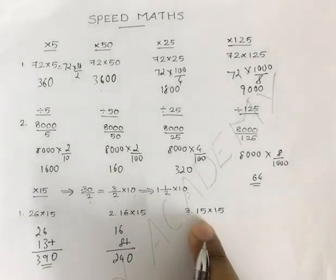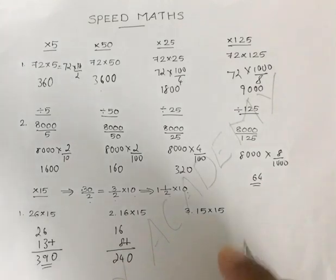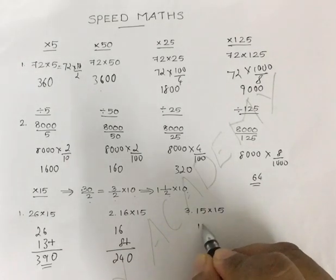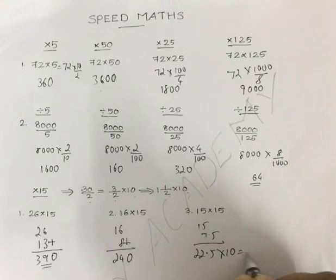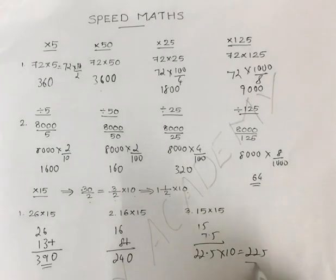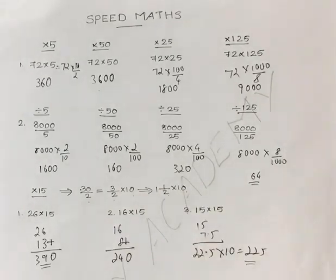This is applicable whether the number is odd or even. For 15 into 15, the half is 7.5. You add it, you get 22.5 into 10. The answer is 225.